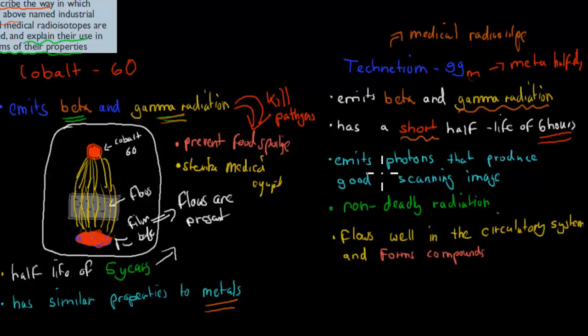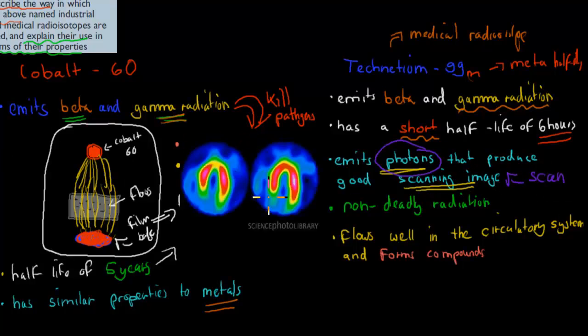It also emits a photon, which is perfect for producing good scanning images. It's used a lot for scanning and detecting problems in body organs. This photon—a light beam emitted with gamma radiation—allows it to scan. You can see in this picture the scanning part. These are the photons that emit. When we scan, we can see clearly—we can see the organs and check if they're healthy. That's because Technetium-99 emits these visible photons.